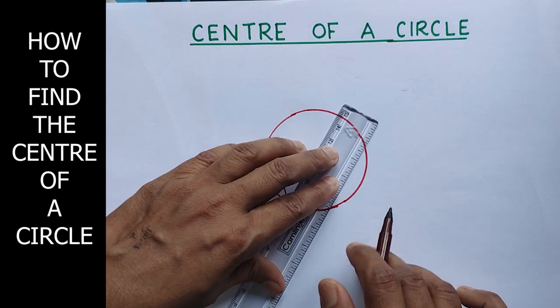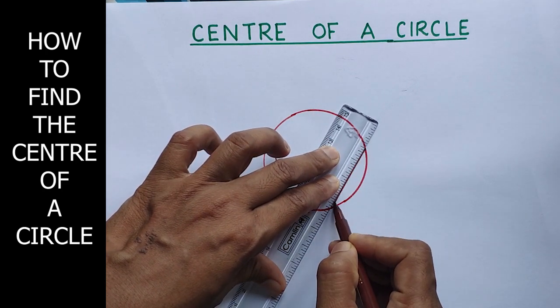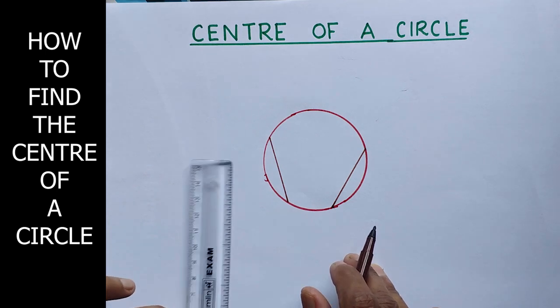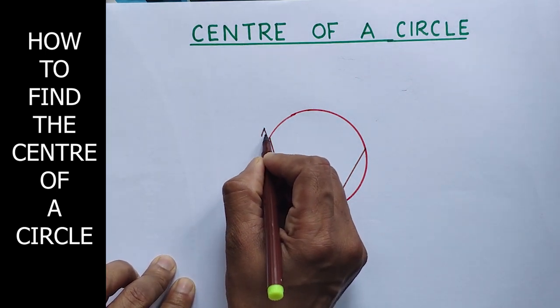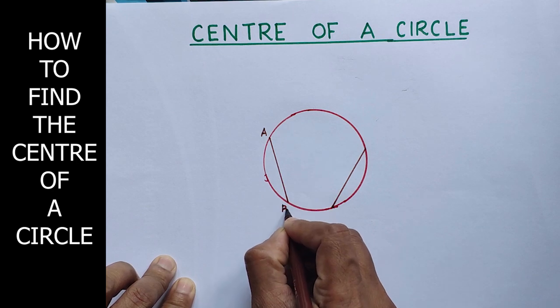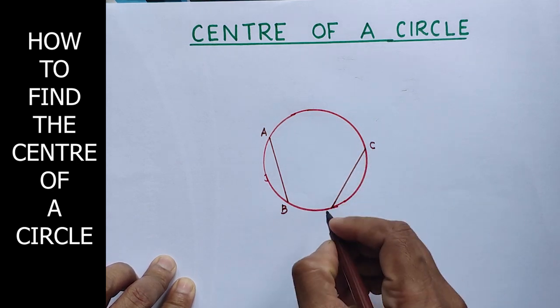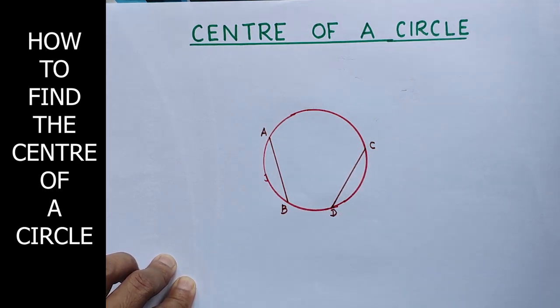This is the another chord. They are not parallel. And I am going to name these two chords. First chord is AB and the second chord is CD. We are going to bisect these two chords. First, we will bisect AB.